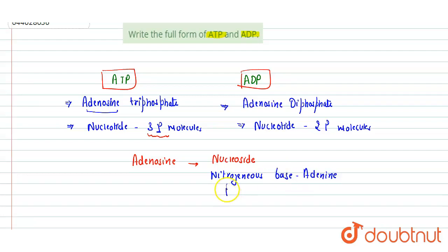The pentose sugar could be ribose or deoxyribose, depending upon RNA and DNA. So the difference lies in three phosphates versus two phosphates, and their full forms are adenosine triphosphate and adenosine diphosphate. Hope you get it, thank you.